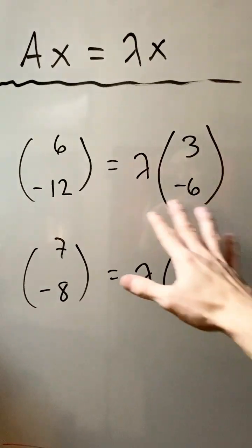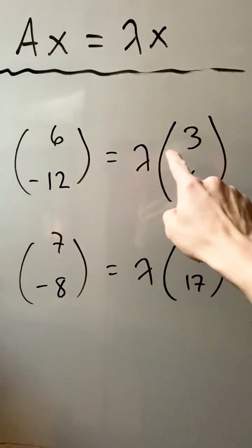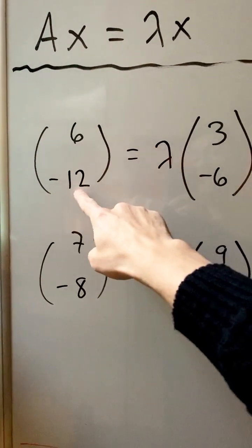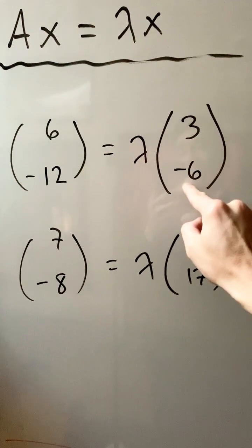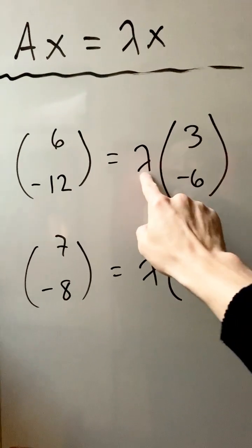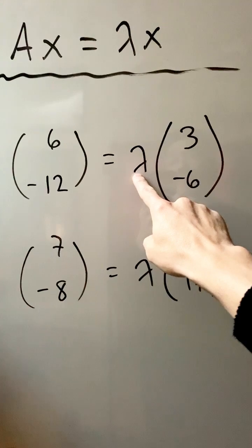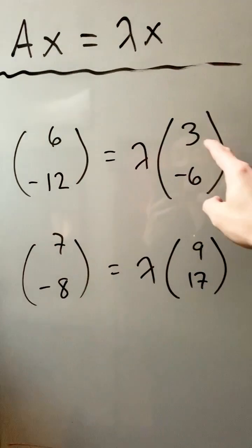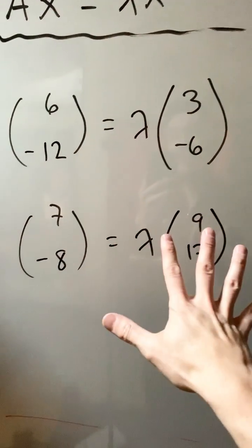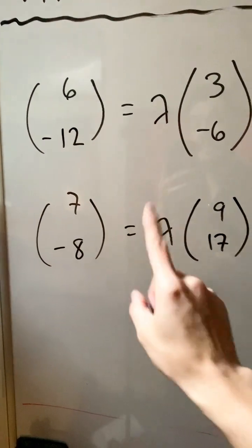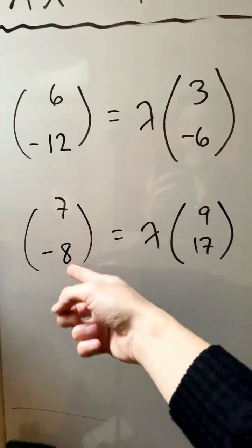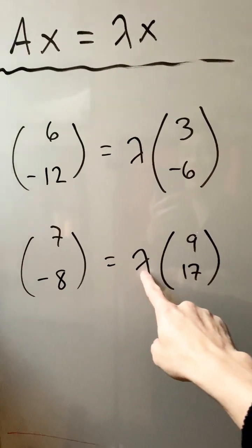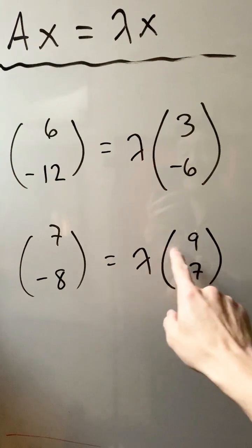Another way to check is to look at the ratios of corresponding elements. For instance, negative 6 divided by 2 is negative 3, and negative 12 divided by 4 is also negative 3 — which means a valid lambda exists. This divided by this must equal this divided by that. Down here it fails because 22 over 1 is not equal to 34 over negative 3 — one would be positive and the other negative. That's another way to decide if a number times one vector can give you the other.